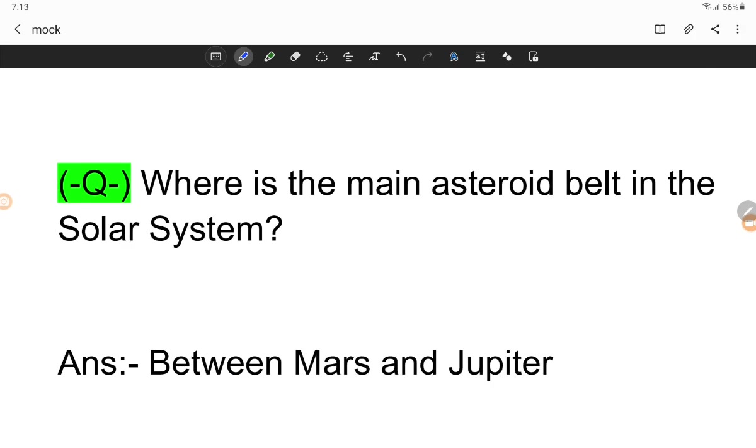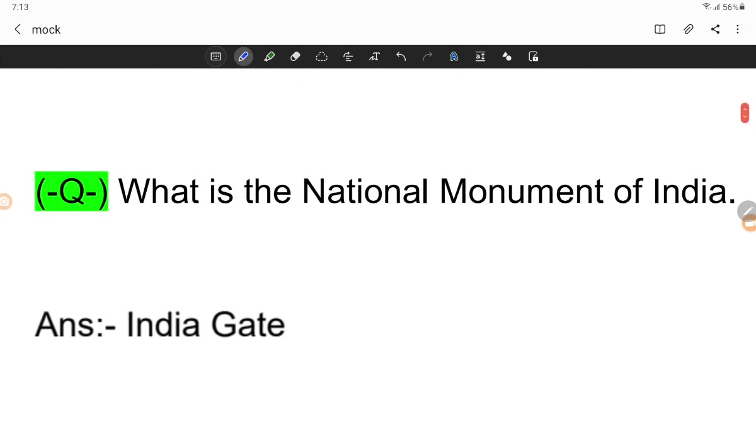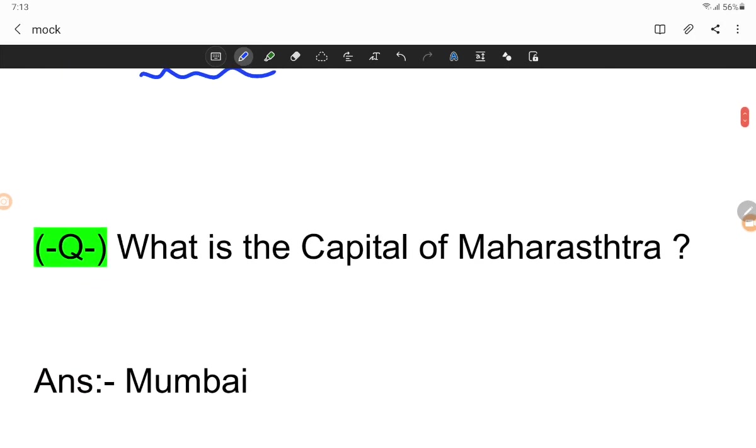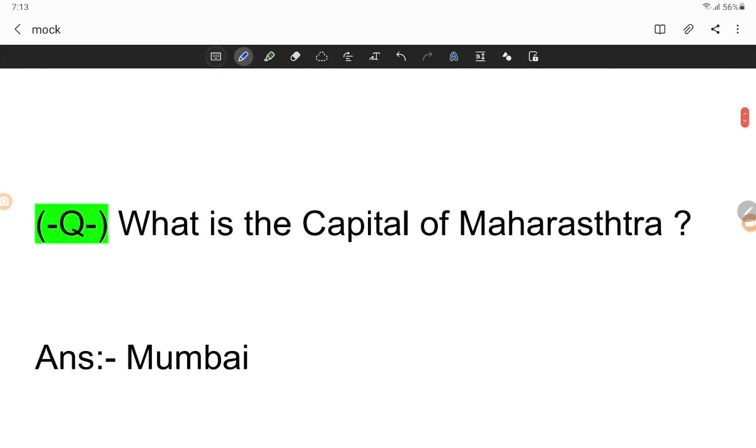Where is the main asteroid belt in the solar system? The asteroid belt is located between Mars and Jupiter. What is the national monument of India?